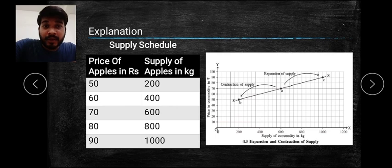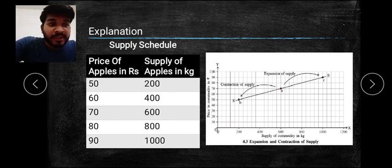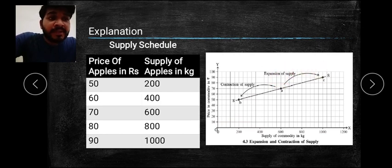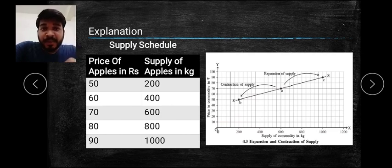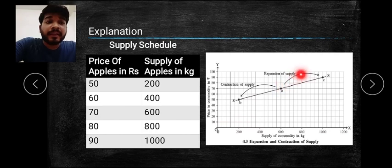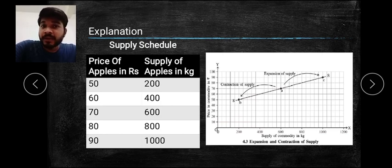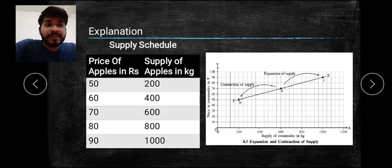When price increases to 90, supply also increases from 600 to 1000. So at price 90 the supply is 1000 - you experience an increase in supply due to increase in price, and that is called expansion of supply. This is the same as what we studied in the law of supply: when there is a change in price, there is a change in supply, and we experience expansion and contraction of supply.